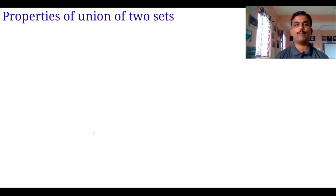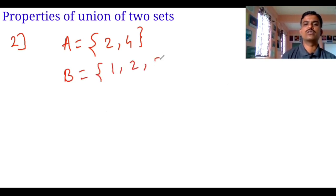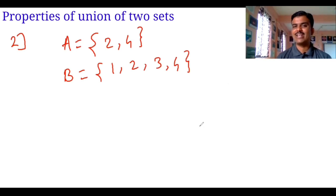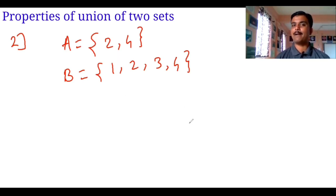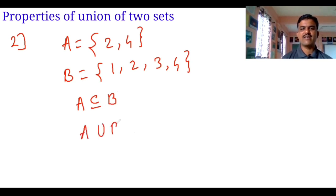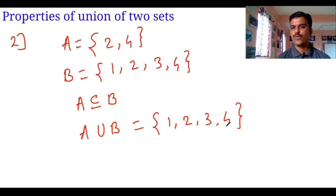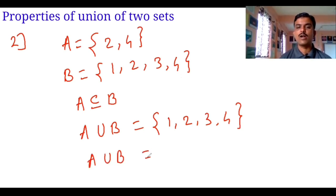So let's look at the second property. Observe that A is equal to {2, 4} and B is equal to {1, 2, 3, 4}. What is the relation between A and B? Every element of set A is also an element of set B. That is why we say A is a subset of B. Now taking A union B, the answer is {1, 2, 3, 4}, which is exactly the same as set B.